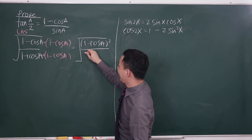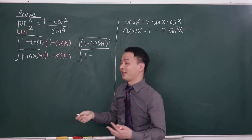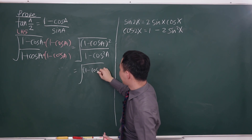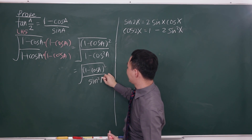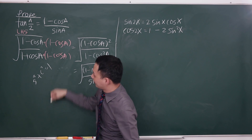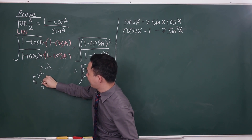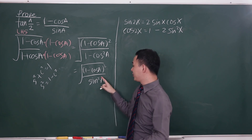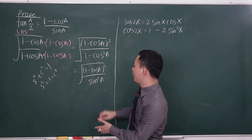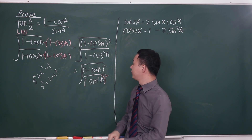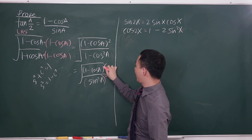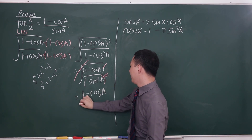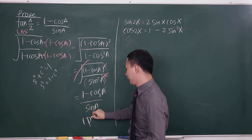I want to eliminate the square root, so I need something squared inside the bracket. I get (1 minus cos a) squared over (1 minus cos squared a). Since sine squared plus cos squared equals 1, I substitute sine squared a for 1 minus cos squared a. Then since I have a square and a square root, they cancel out, and I get (1 minus cos a) over sine a — proven.